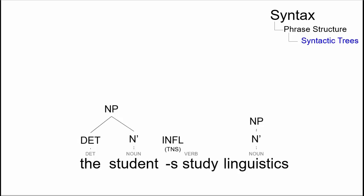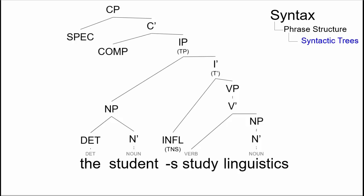The inflection for tense, sentence, and person s can be placed under the inflection node, while the verb study goes under the v-bar. The intermediate node v-bar links together with the noun phrase linguistics to create the verb phrase, and the syntactic tree for the sentence is created.